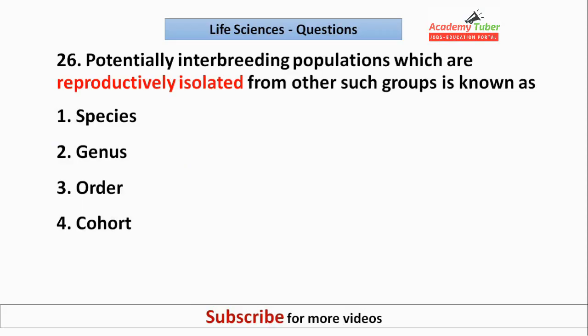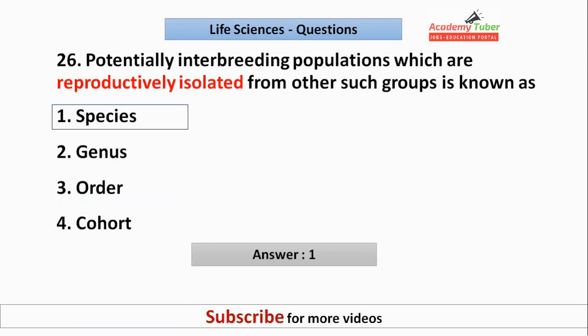Potentially interbreeding populations which are reproductively isolated from other such groups are known as? The answer is species.